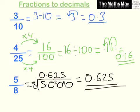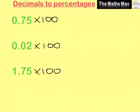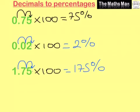To change decimals to percentages is very easy — all we do is multiply by 100, moving the decimal point two spaces. So 0.75 becomes 75%, 0.02 becomes 2%, and 1.75 becomes 175%. Changing decimals to percentages is simply multiplying by 100.